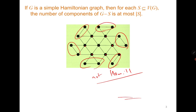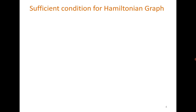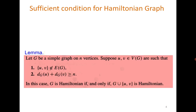But at the same time we are interested in a sufficient condition for a Hamiltonian graph. For this we need the concept of the closure. We say that let G be a simple graph and u, v are two non-adjacent vertices in G such that their degree sum is greater than or equal to n.